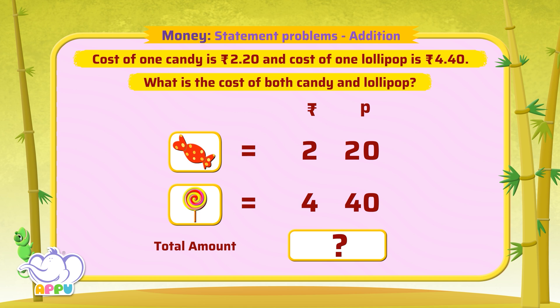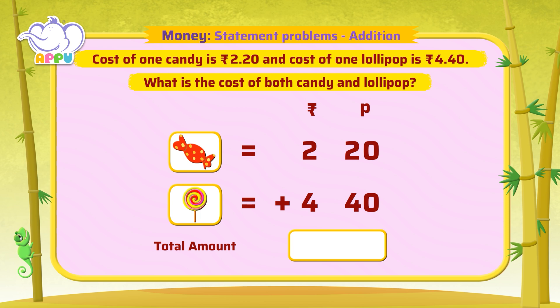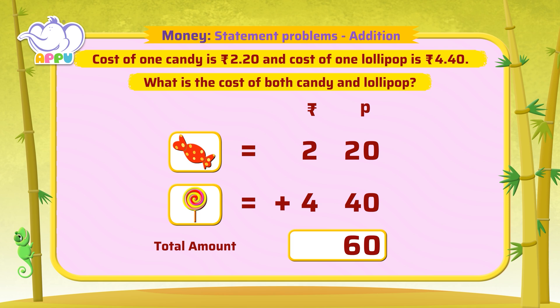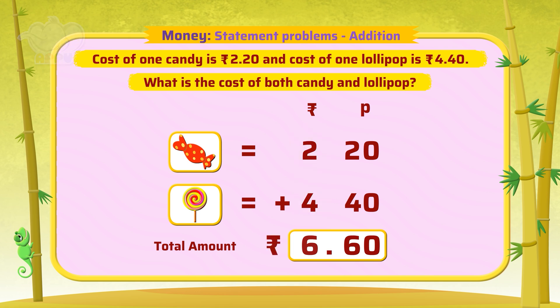To find the cost of both the candy and lollipop, we add each of their costs. Let's add the paise first: 20 plus 40 equals 60. Now let's add the rupees: 2 plus 4 equals 6. So the cost of both the candy and lollipop is 6 rupees 60 paise.